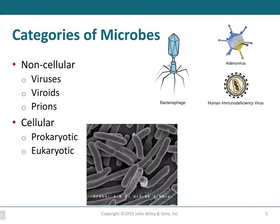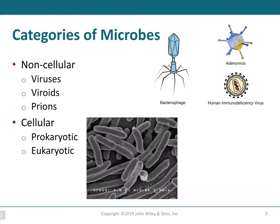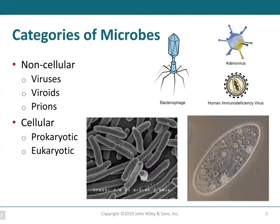For the cellular category, it can be divided into prokaryotic cells — these are basically bacteria — and eukaryotic examples. Here is a planaria. These are single-celled eukaryotic organisms, sometimes called protists.